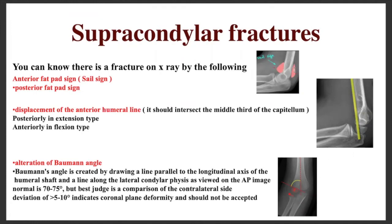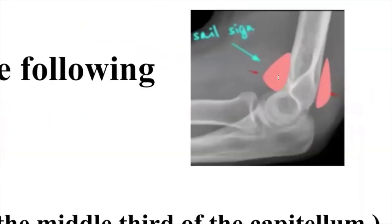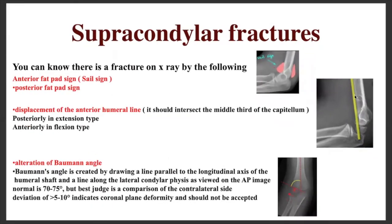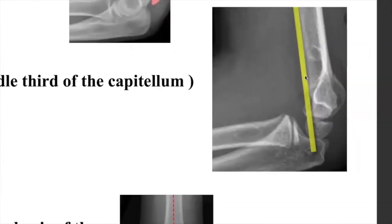On elbow X-ray for a suspected supracondylar fracture, look for the sail sign — the anterior fat pad sign; if you see a sail sign anteriorly or posteriorly, think of an occult fracture and developing hematoma. Also look at the anterior humeral line: it should intersect the middle third of the capitellum. Posterior displacement is seen in the extension type; anterior displacement in the flexion type.